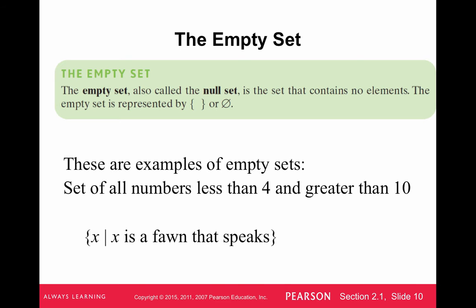The empty set is going to be somewhat of an important set. Not super important, but you do want to understand the notation for it. Sometimes called the null set is a set that contains no elements. There's two ways to represent it. If we just put the brackets with nothing inside or we do a zero with a slash through it, really means no elements. The empty set, no elements.